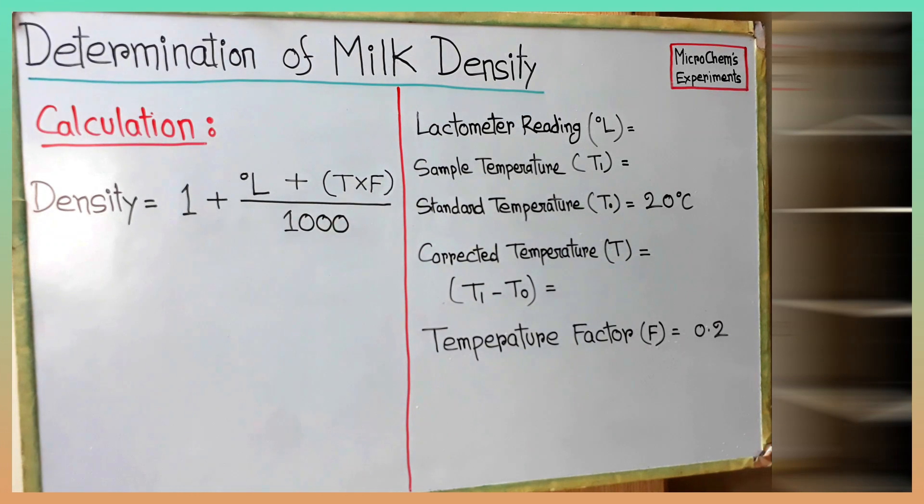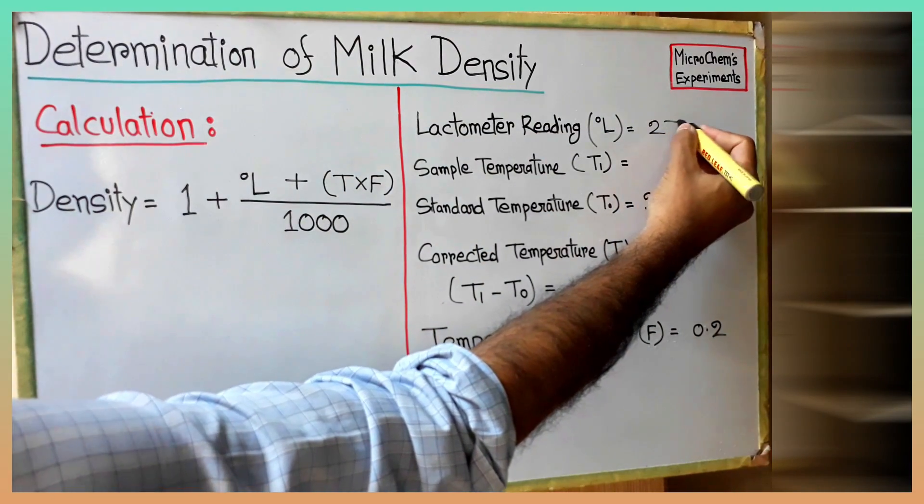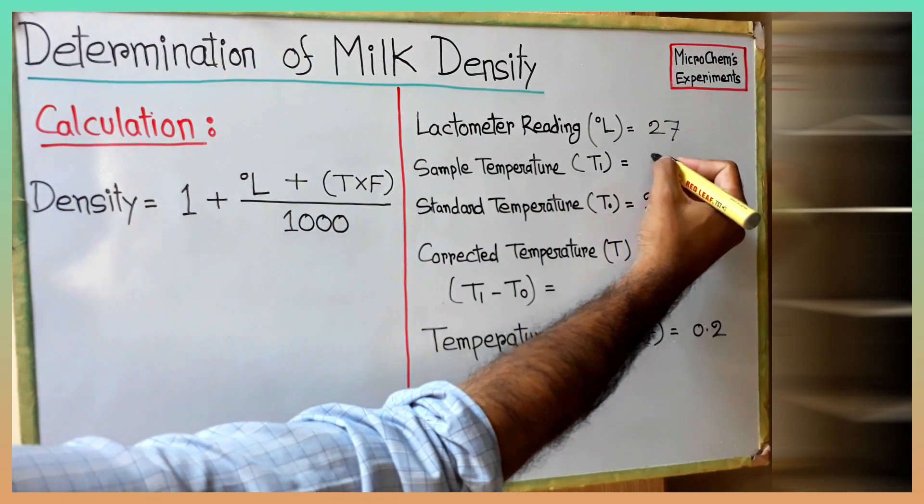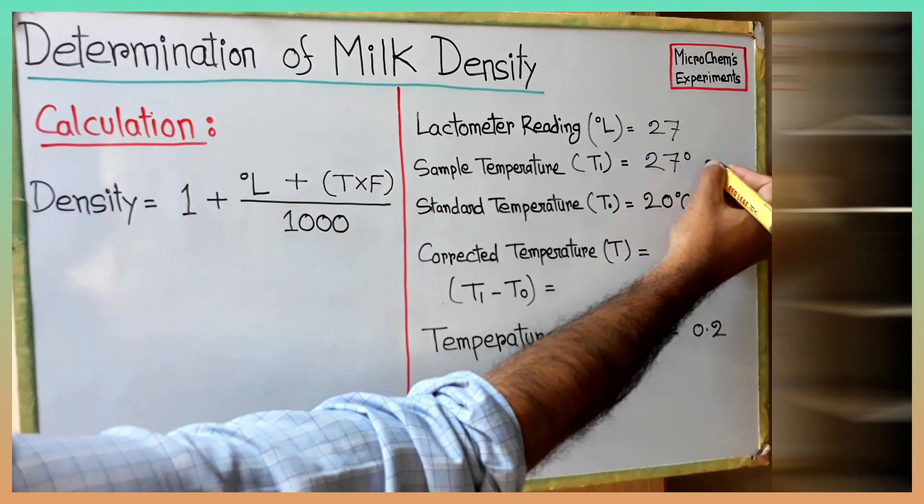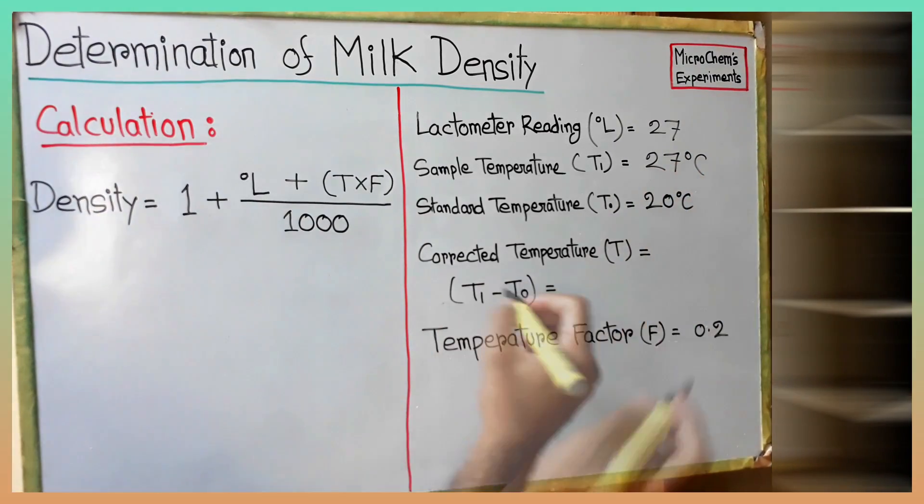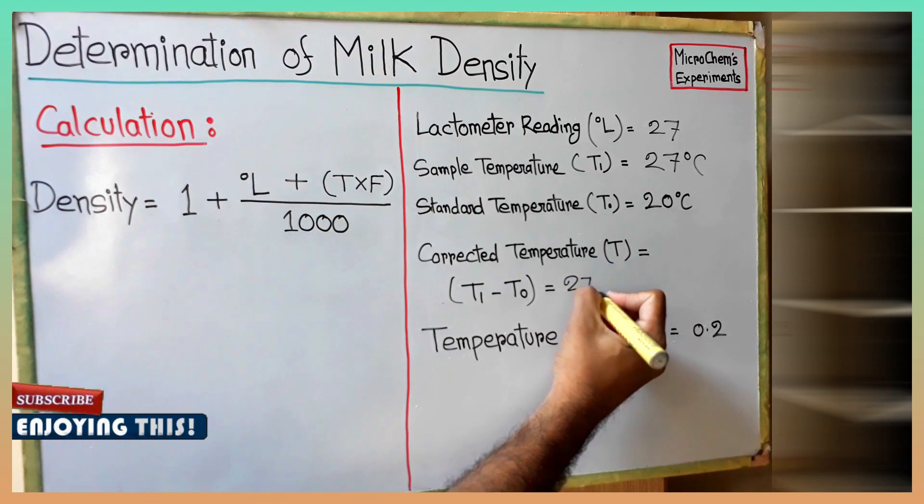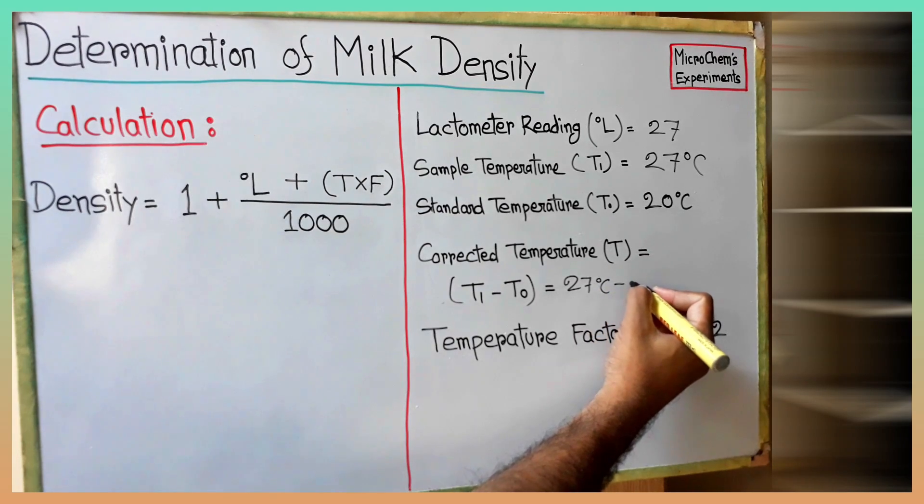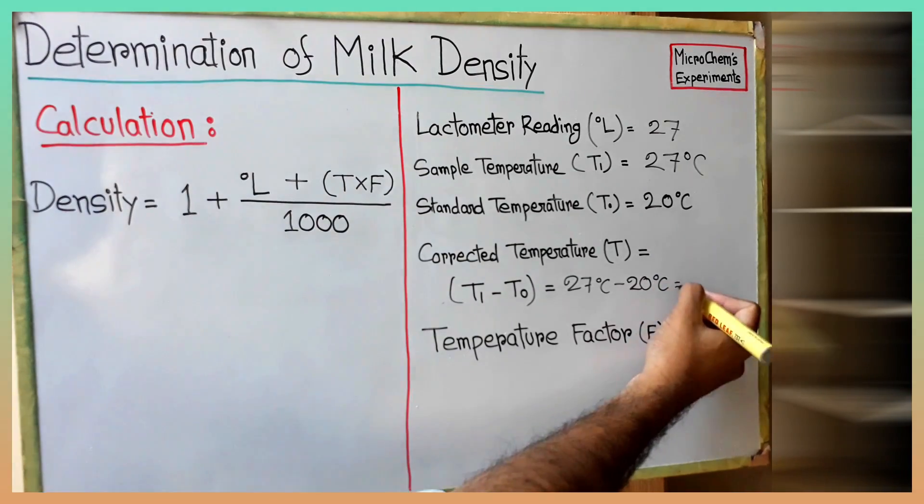Let's put the values on the right side of the board. Lactometer reading L is 27. Sample temperature T1 is 27 degrees Celsius. Standard temperature T0 is 20 degrees Celsius. Corrected temperature is 7 degrees Celsius, found by subtracting standard temperature from sample temperature.